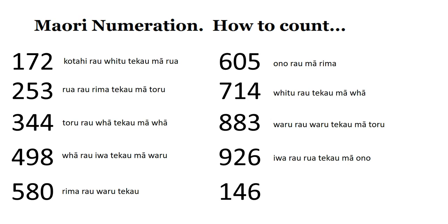And the last one, 146 — kotahi rau, whā te kau mā ono. We've got one hundred, four tens, and we add six.